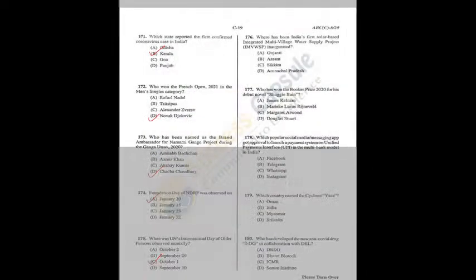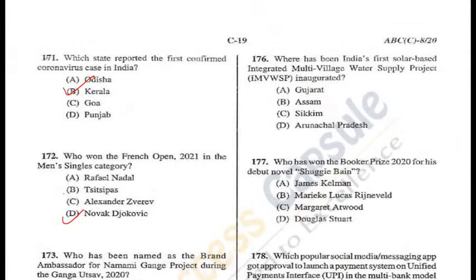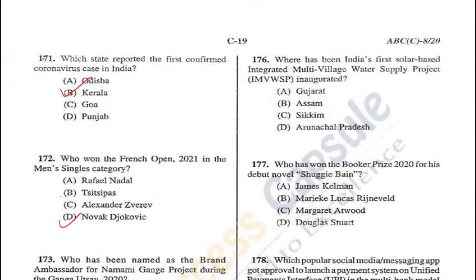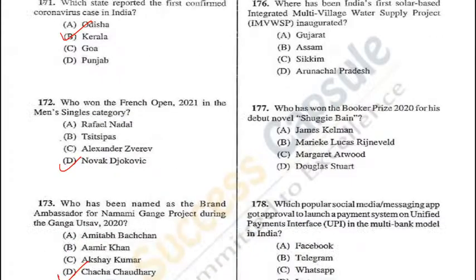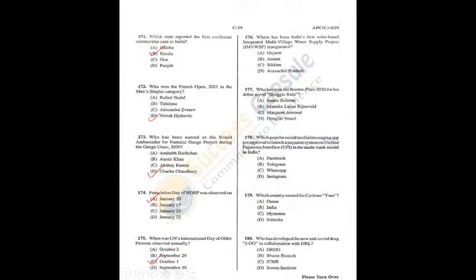Question 176: India's first solar power-based integrated multi-village water supply project was inaugurated in Arunachal Pradesh — D is the correct answer. Question 177: Booker Prize for 2020 was given to Douglas Stuart — D is the correct answer. Q177 = D, Q176 = D.